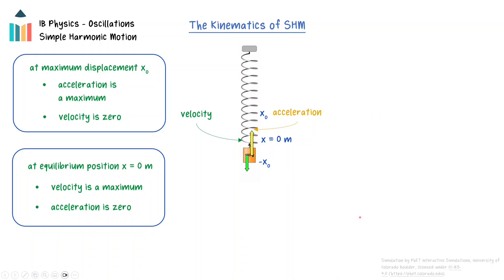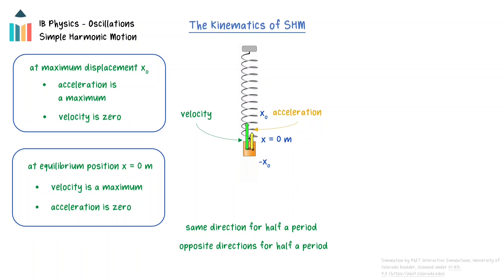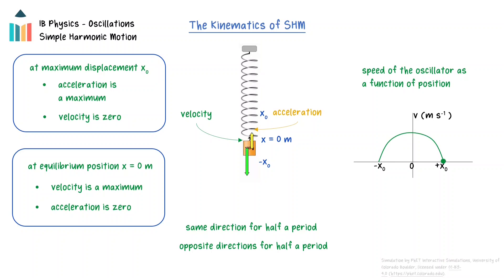The acceleration and velocity vectors are in the same direction for half a period, causing the object's velocity to increase, and are in opposite directions for half a period, when the object's velocity is decreasing. This motion can be shown in a graph of the speed as a function of position of the oscillator. The speed will be a maximum at the equilibrium point, and zero at the maximum displacements.